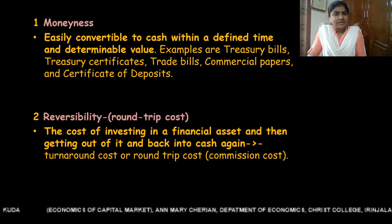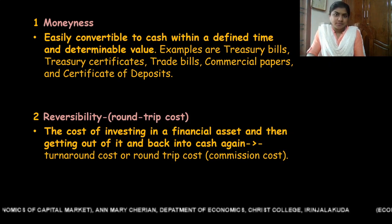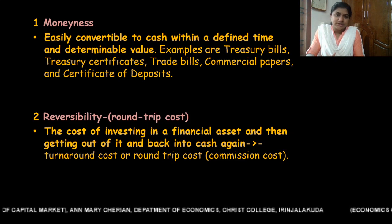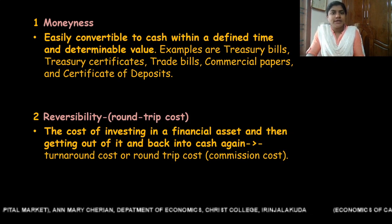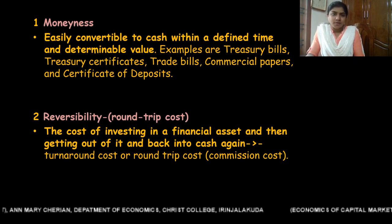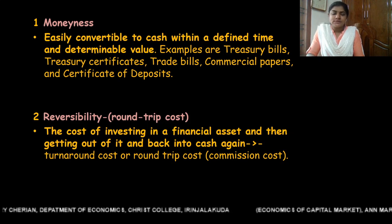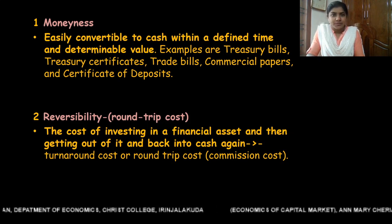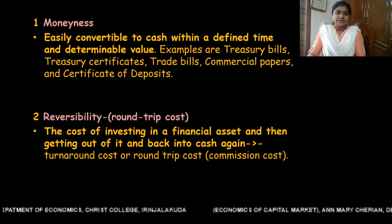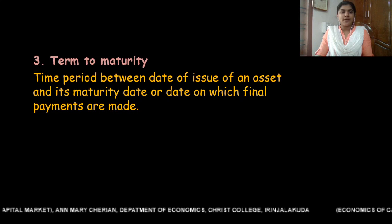Reversibility involves certain costs such as commission costs and transaction costs, which are termed as round trip costs. For some financial assets, round trip costs will be very low, whereas for others they will be high. So round trip costs or reversibility costs vary from one asset to another.